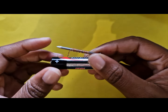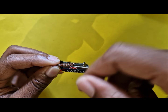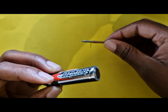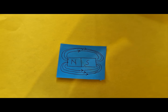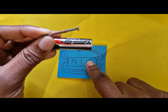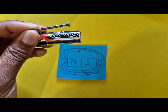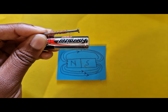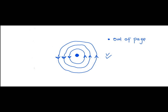An electromagnet — created when we wrap a conducting wire around an iron core and connect it to a battery — also has those magnetic field lines we observed with a permanent magnet. This means the electromagnet will also have its own north and south pole. So we need to draw that direction. How do we know which side will be the north pole and which will be the south? We will draw the solenoid in our answer book, so let's do that.